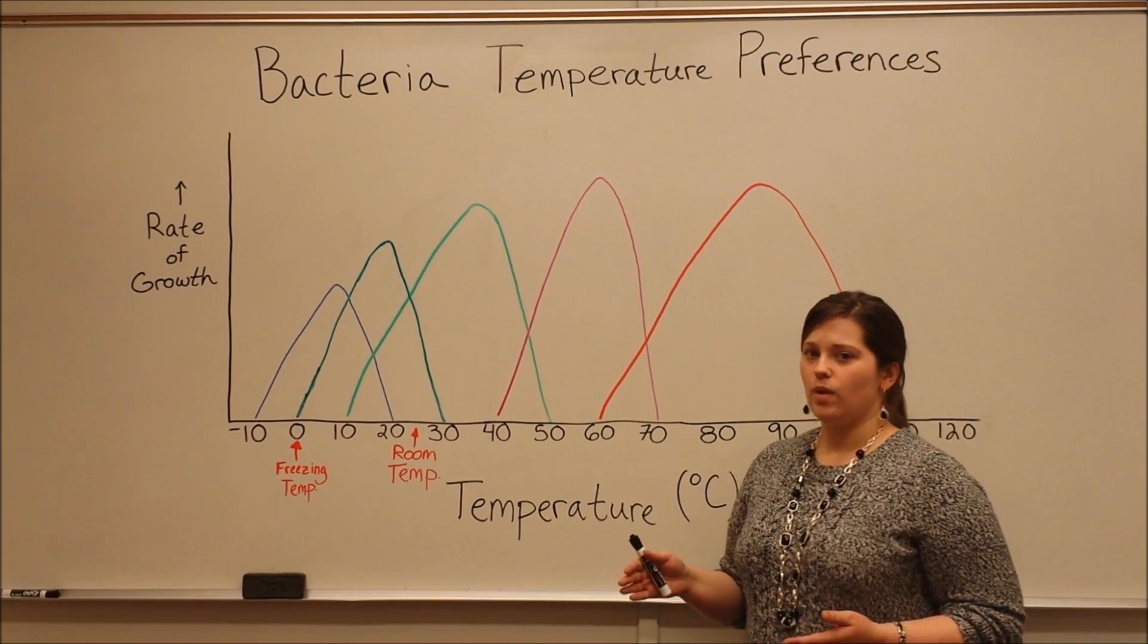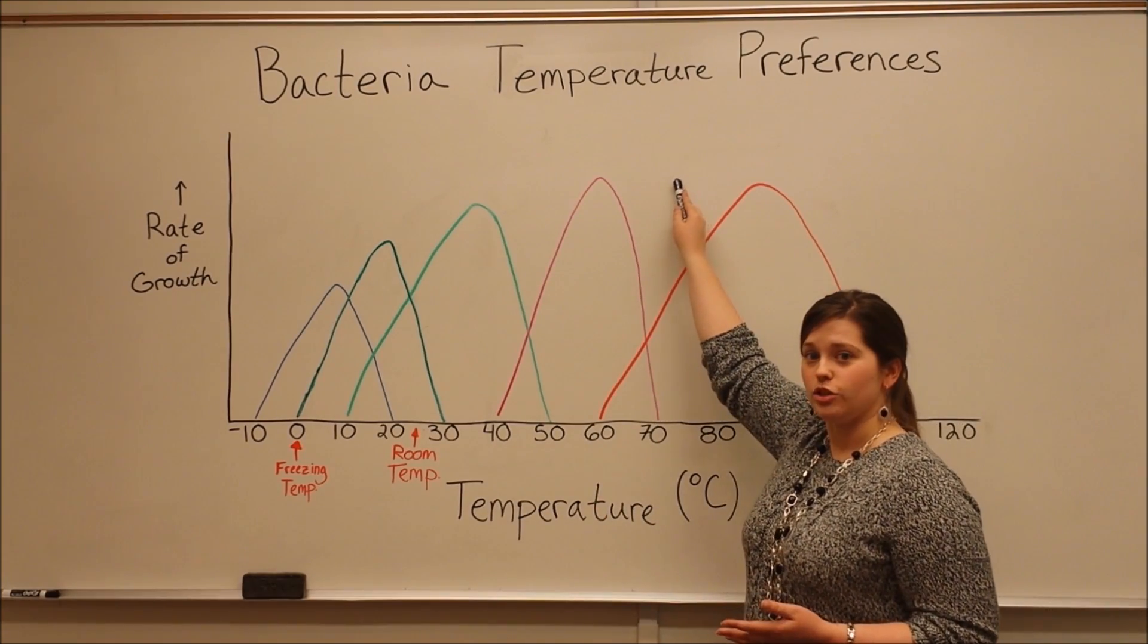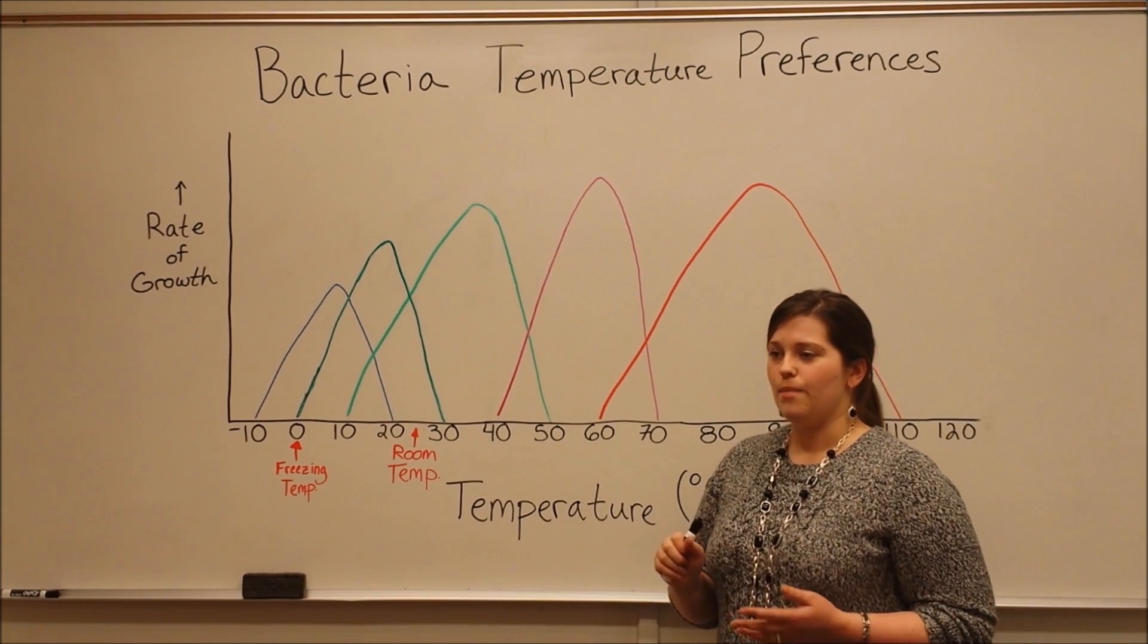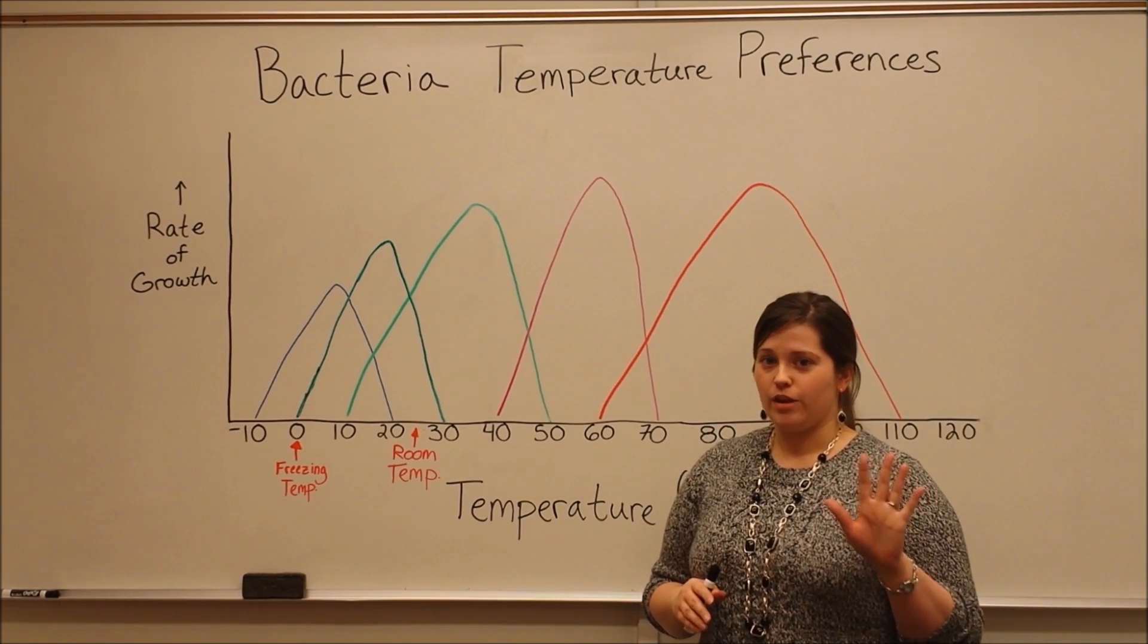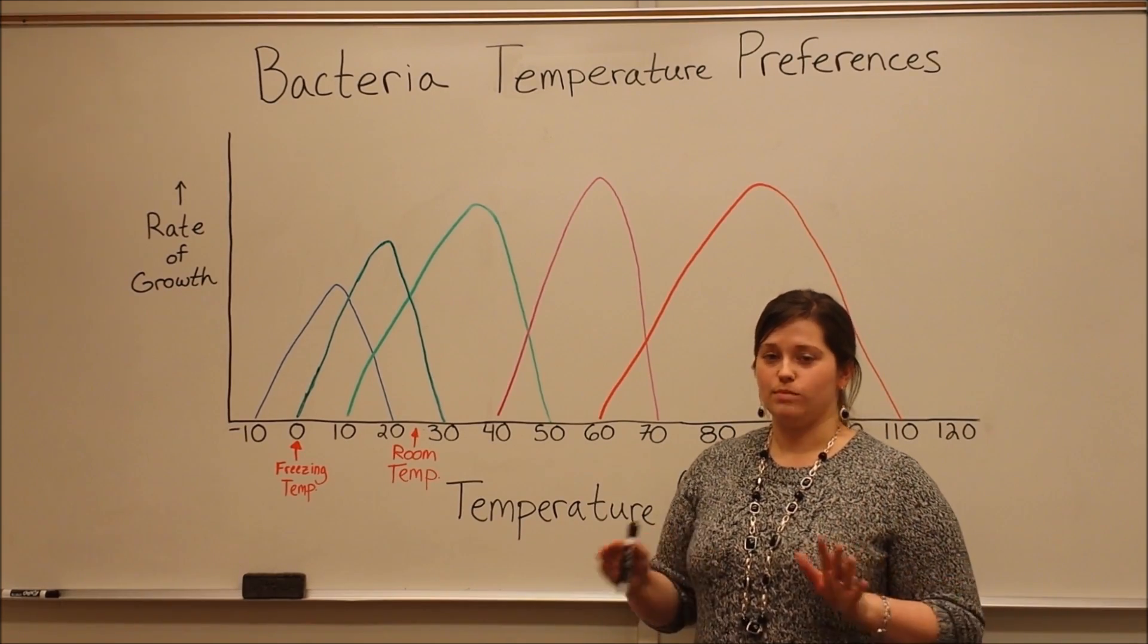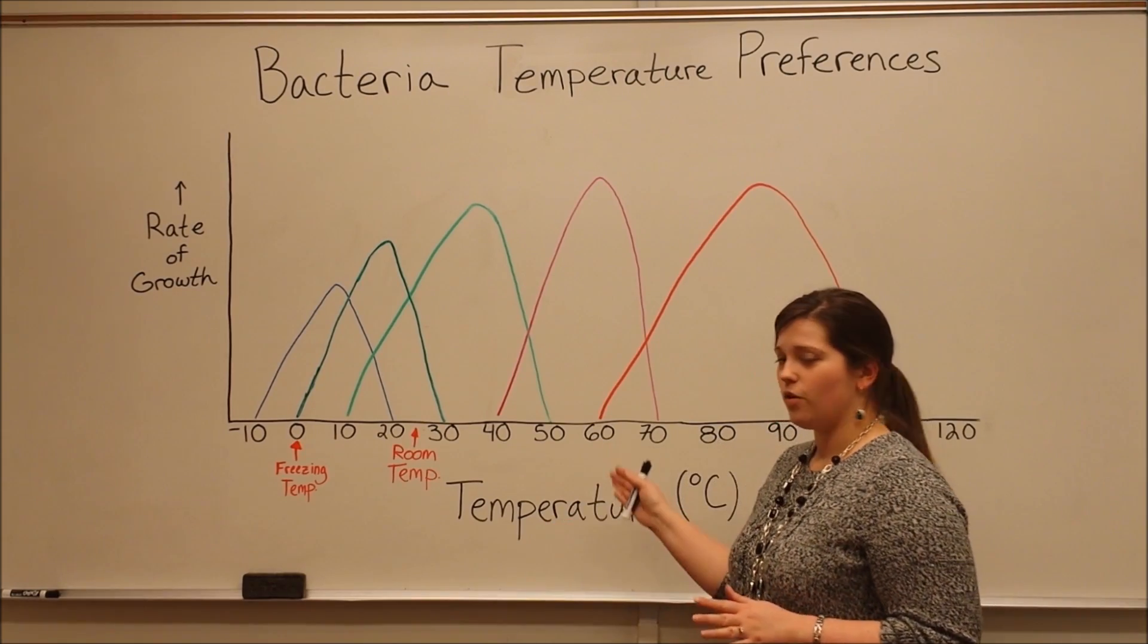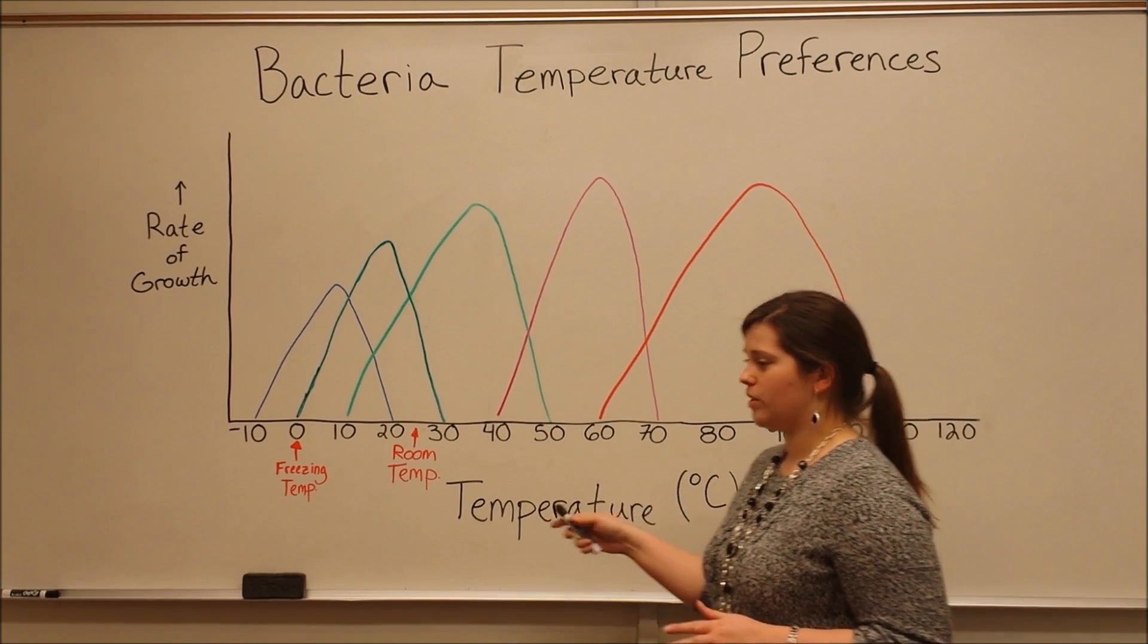Now, that's why today we're talking about bacteria temperature preferences. Bacteria can be classified into five main groups based on what temperatures they grow at. I've got a graph here. Let's talk first about what's on the y-axis.